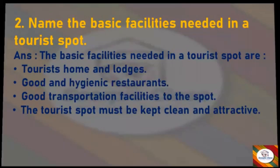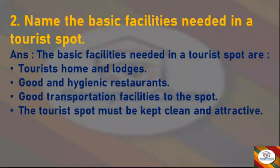Next question: Name the basic facilities needed in a tourist spot. Answer: The basic facilities needed in a tourist spot are — tourist homes and lodges, good and hygienic restaurants, good transportation facilities to the spot, and the tourist spot must be kept clean and attractive. So these are the basic facilities needed in a tourist spot.